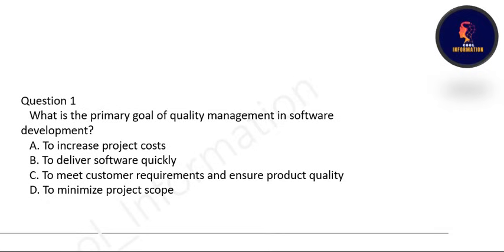Welcome back everyone. In this video we will see the MCQs of Quality Management and Advanced Technique of Software Engineering, which is your unit number 6. The first question: what is the primary goal of quality management in software development? Options include to increase project cost, to deliver software quickly, to meet the customer requirement and ensure product quality, or to minimize project scope. Correct option is C — the primary goal of quality management is to meet customer requirements and ensure product quality.